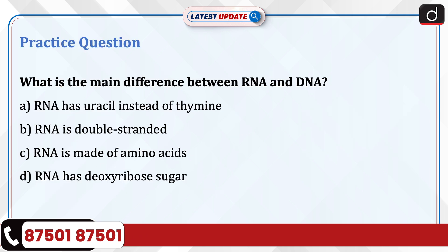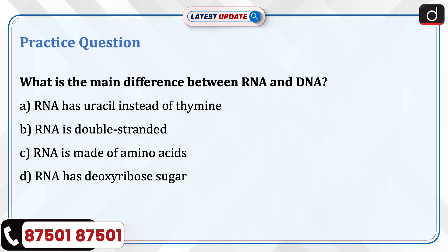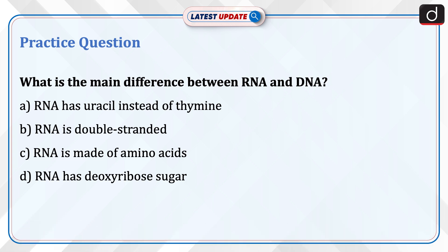Now it's time to do a practice question. What is the main difference between RNA and DNA? A. RNA has uracil instead of thymine. B. RNA is double-stranded. C. RNA is made of amino acids. D. RNA has deoxyribose sugar. Send your answer for this question in the comment section.